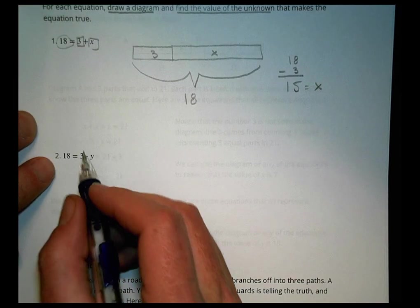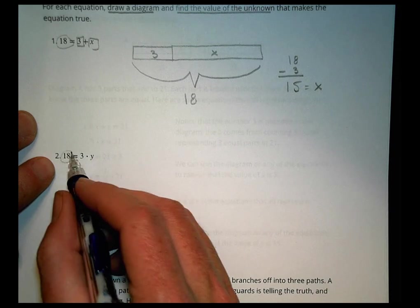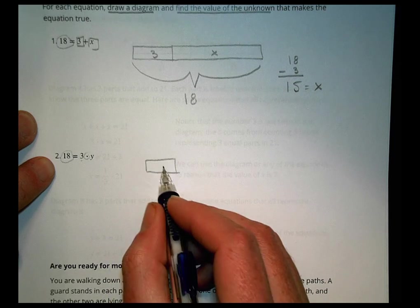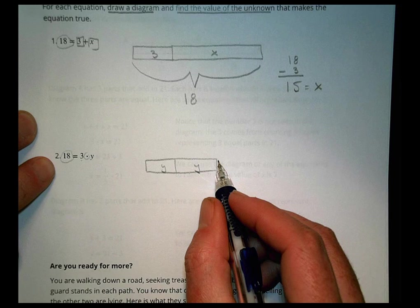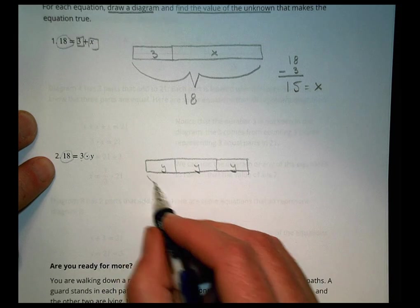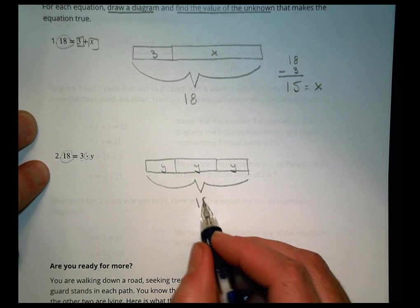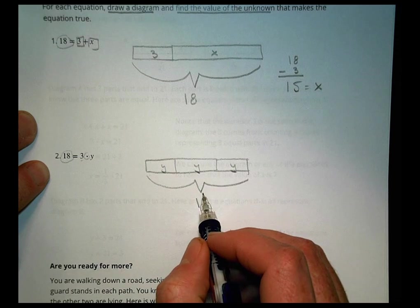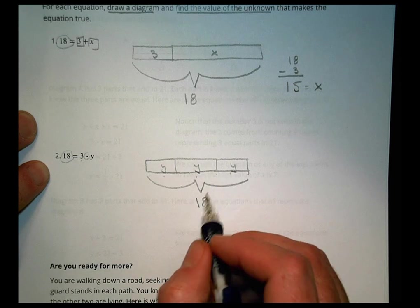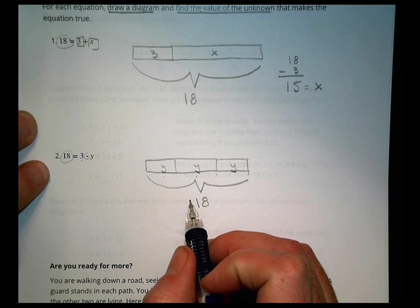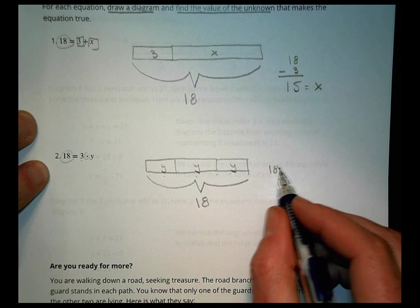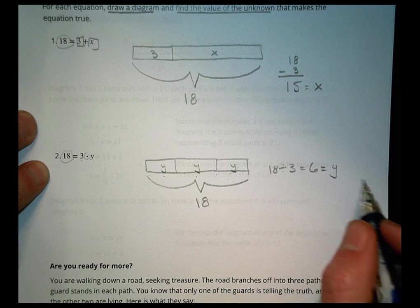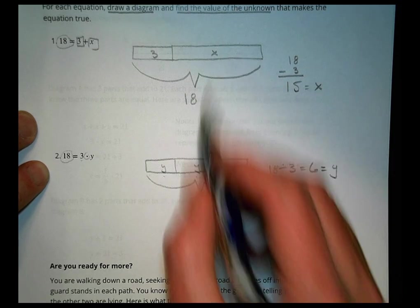In a similar way, we have a sum total of 18 but now we're doing three groups of y. We draw one group of y, another group of y, and another group of y, and those three groups of y have a value of 18. So we take 18 and divide it into three equal parts: 18 divided by 3 equals 6, and that becomes our value of y.